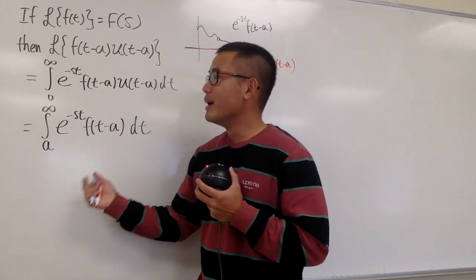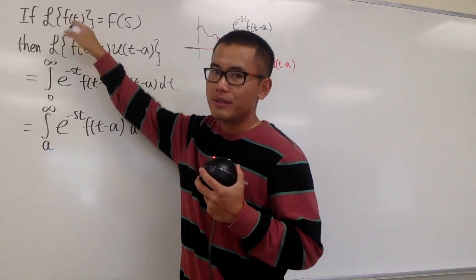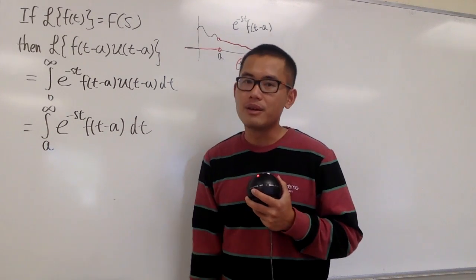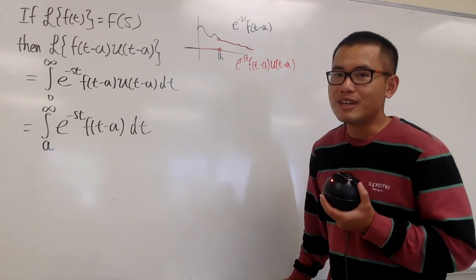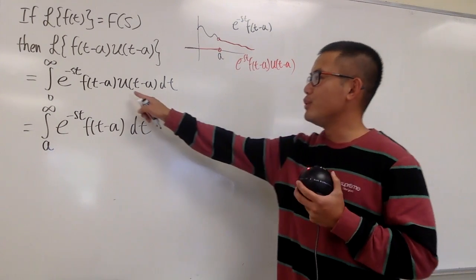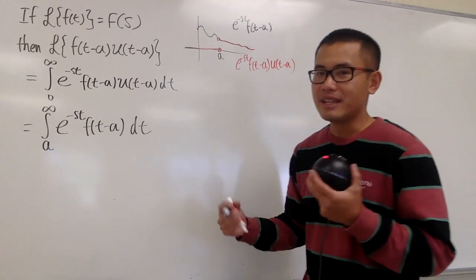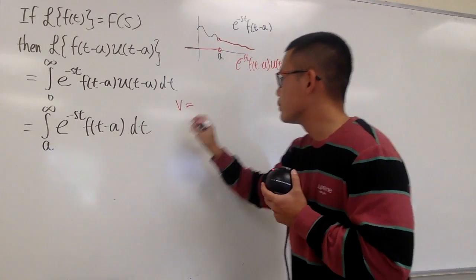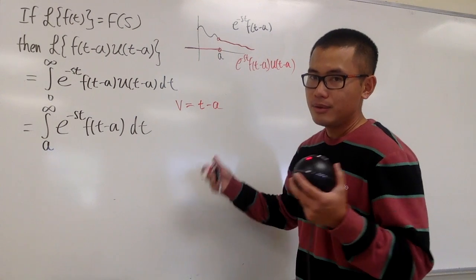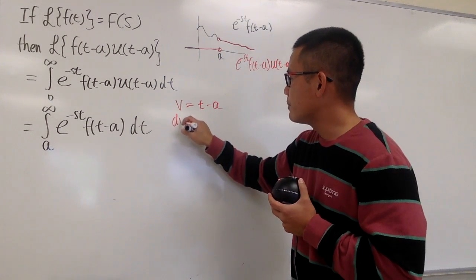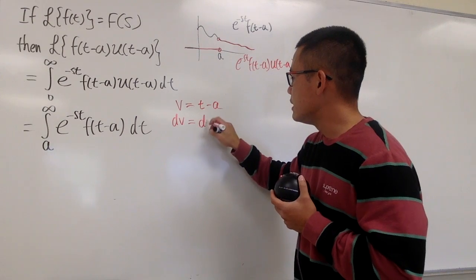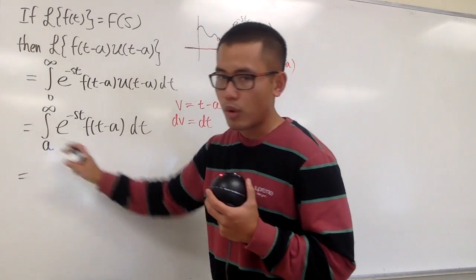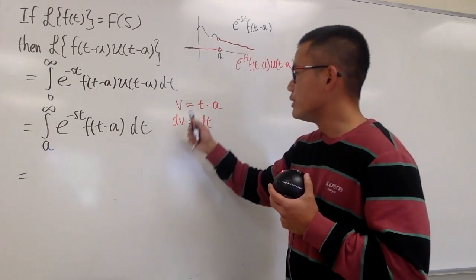This looks similar to the original definition of the Laplace transform of f of t, except here we have t minus a instead of just f of t. How about let's do some substitution. We have u right here already, so let's pick another letter. Let me do a phi substitution — let phi be equal to the input, which is t minus a. Let's go ahead and differentiate both sides.